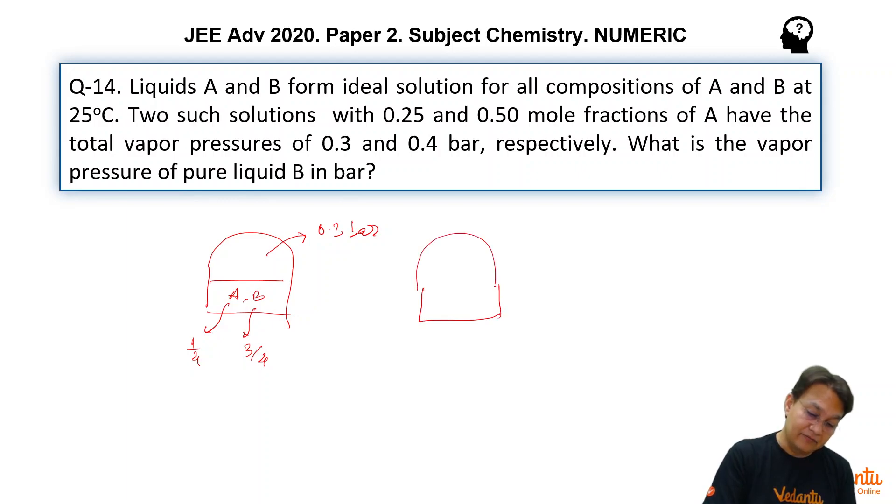And in another vessel, we have the mole fractions of A and B respectively half and half, and the pressure which is created here is 0.4 bar.